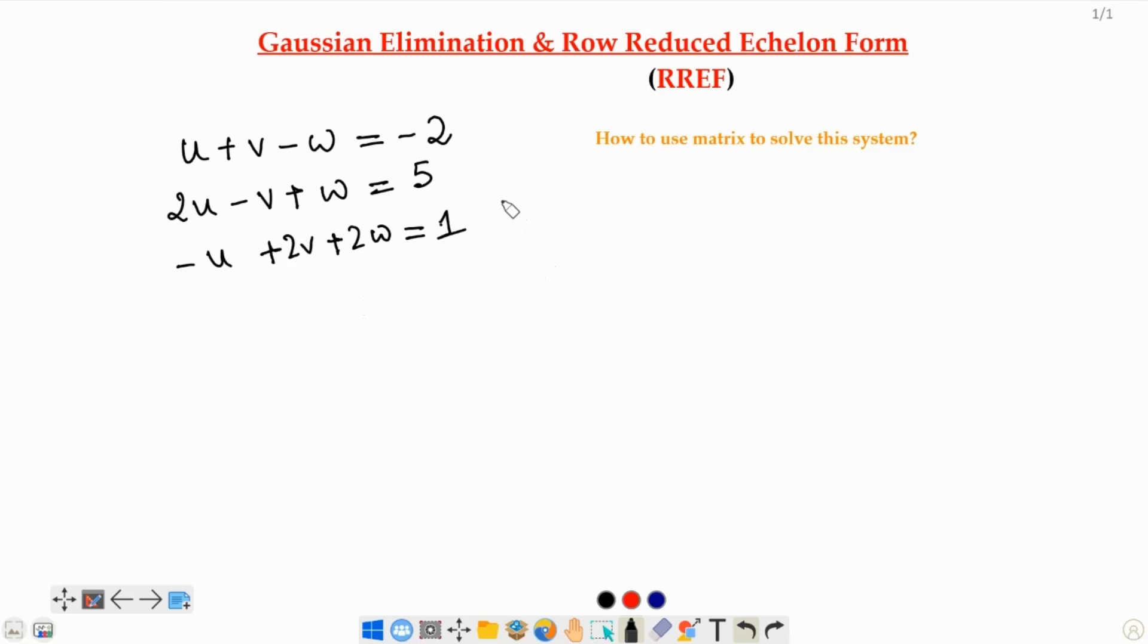The first thing we need to convert it into an augmented matrix. Remember, in our last session we discussed how to convert a system of equations into an augmented matrix. If you have not gone through that, please do this so that you can understand this session much better. Okay, so let us write the coefficients in this matrix form. We have 1u plus 1v minus 1w. Let us use a vertical bar to separate the left hand side from the right hand side of the equation. So, I am going to put negative 2 on this side.